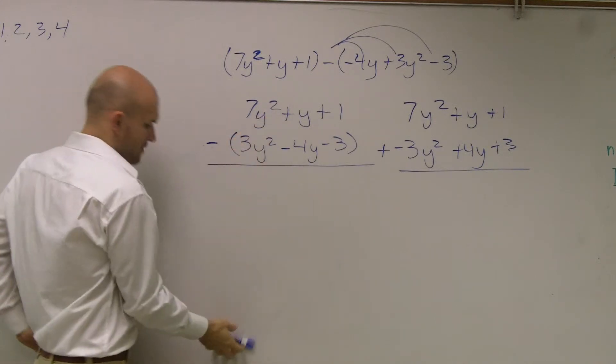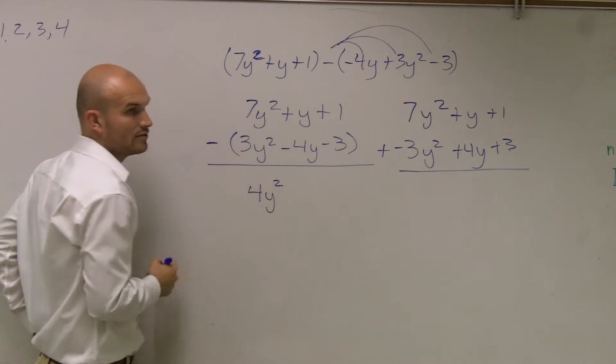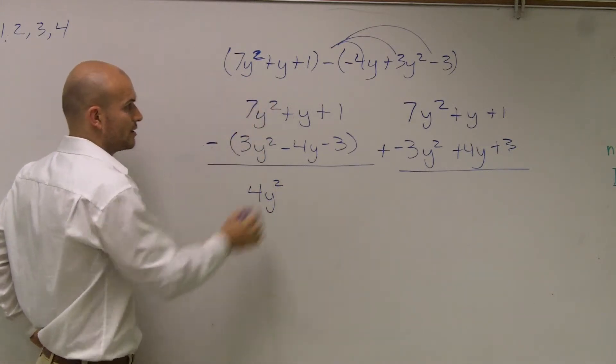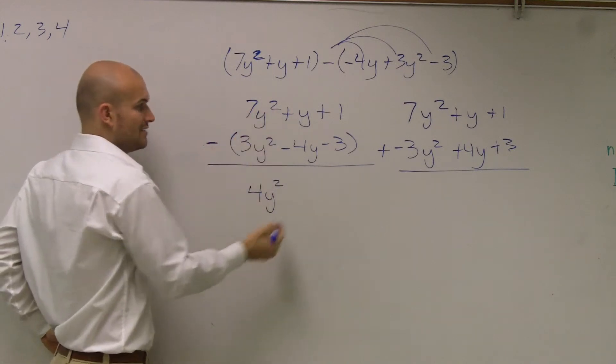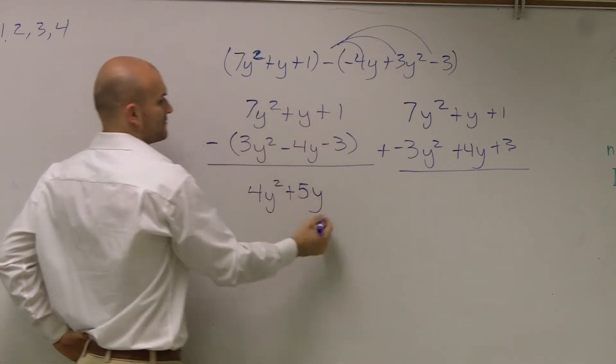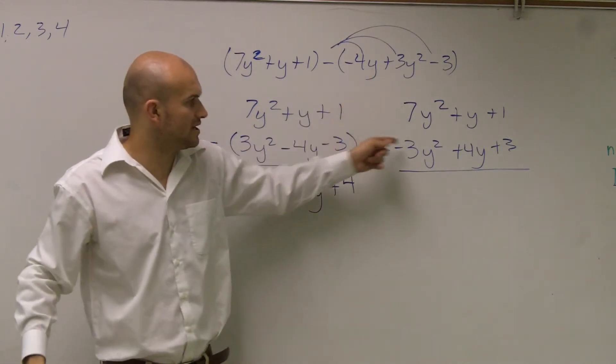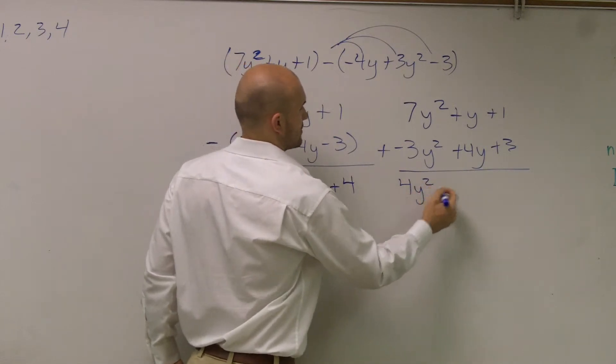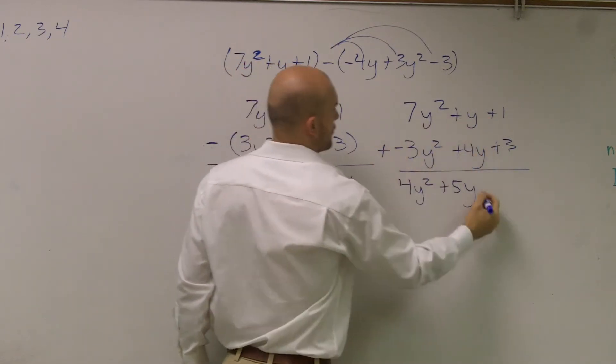7y squared minus 3y equals 4y squared. Right? They have the same base and same exponent. Y minus a negative 4, that's a double negative, so that gives me a positive 5y. 1 minus a negative 3, double negative, gives me 4. 7 plus negative 3y squared, y plus 4y, 1 plus 4.